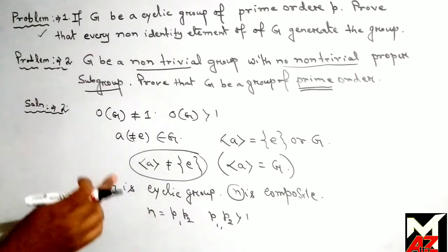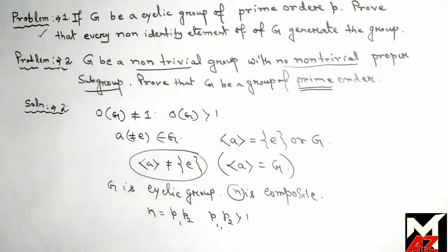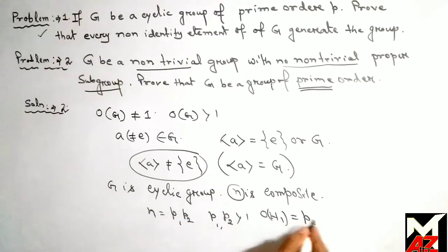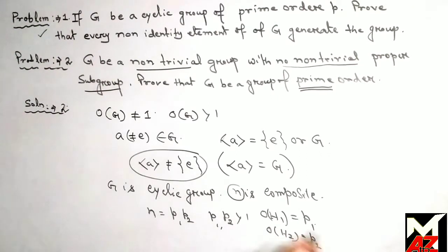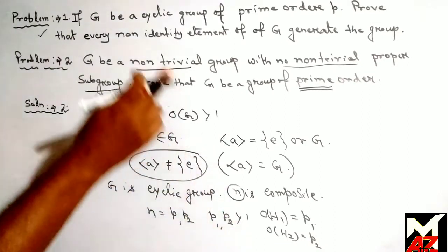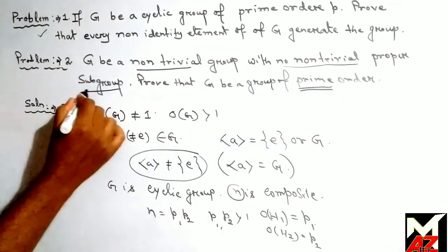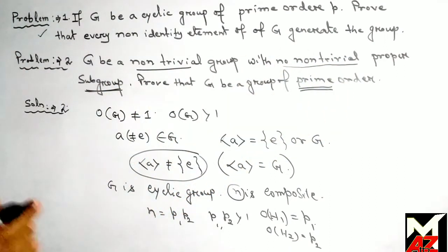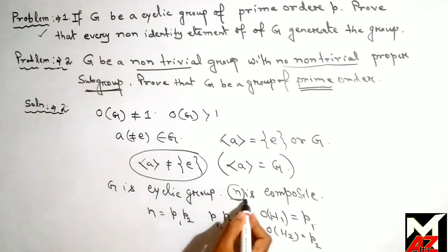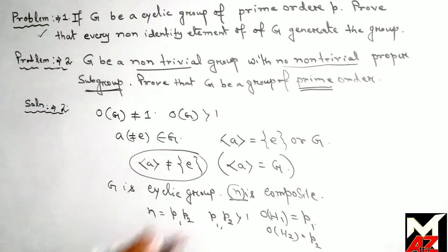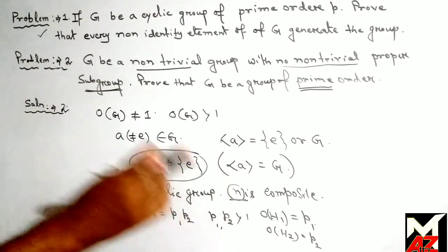From the property of cyclic groups — that for a cyclic group of order n, for every divisor of n there exists one and only one subgroup — we say that G has a subgroup of order p1 and also of order p2. But in the problem it is given that G has no non-trivial proper subgroup. So n cannot be a composite number.